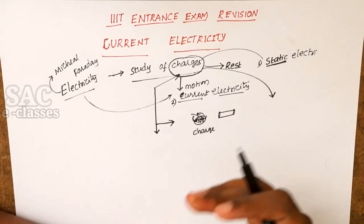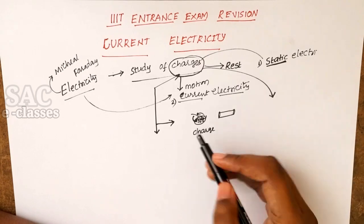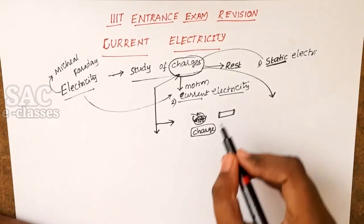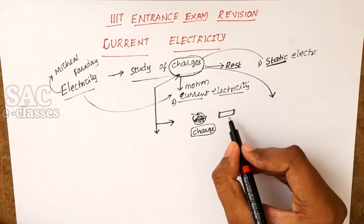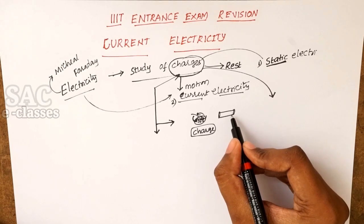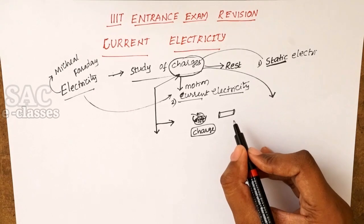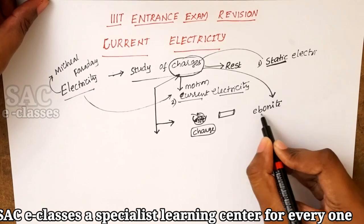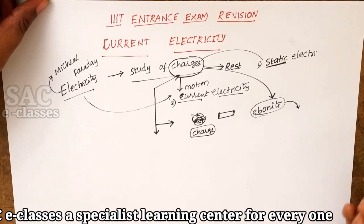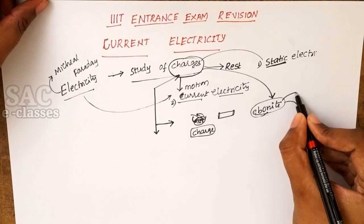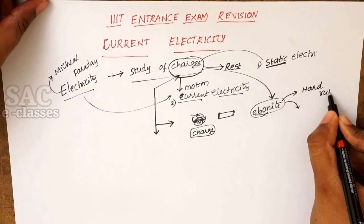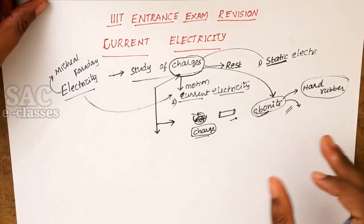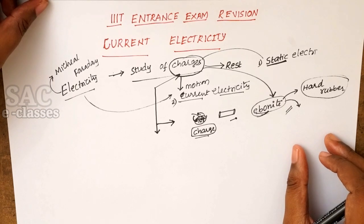A charge is either positive or negative — nothing but an active one. A comb is neutral before rubbing, but after rubbing it becomes charged. Similarly, a glass rod rubbed with silk cloth becomes charged. An ebonite rod rubbed with cloth also attracts pieces of paper. Ebonite is a kind of hard rubber, and any such material will act as a charged particle.